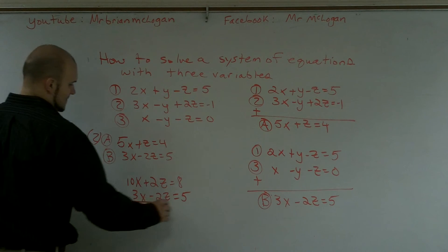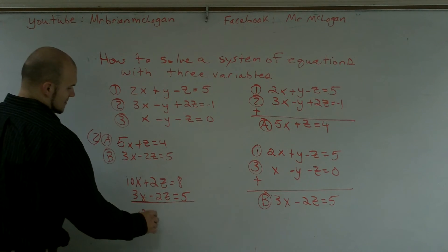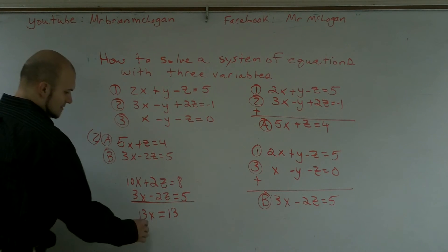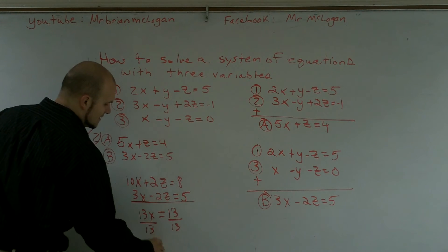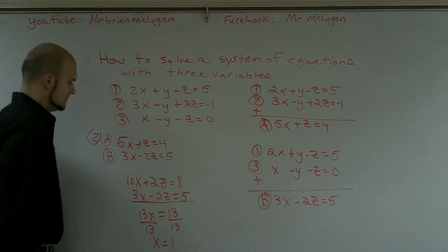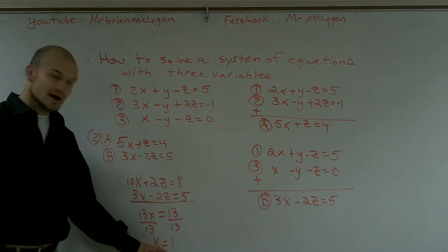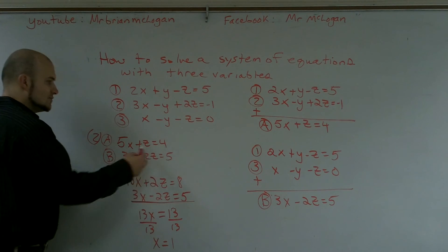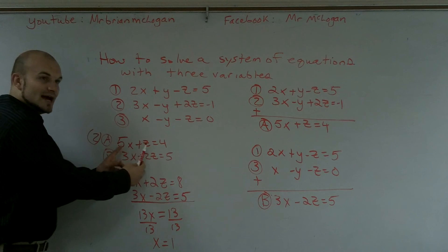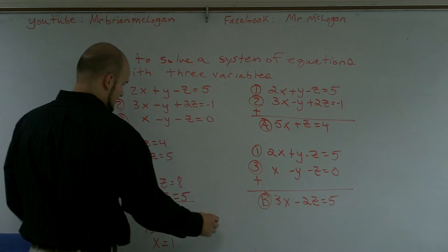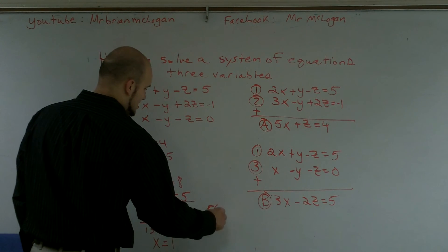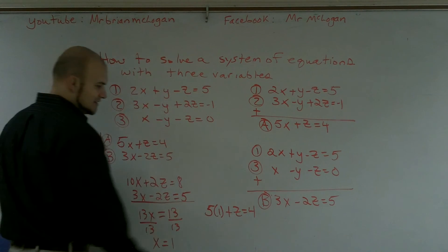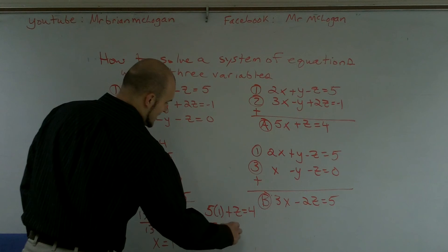Adding those two equations together: 13x equals 13. Dividing both sides by 13, x equals one. Now I've successfully solved for x. To find z, I plug x into one of the two-variable equations — using the top one: five times one plus z equals four, so z equals negative one.